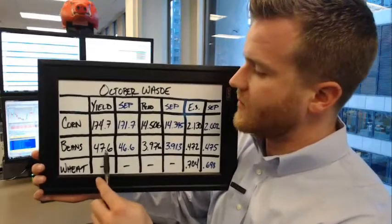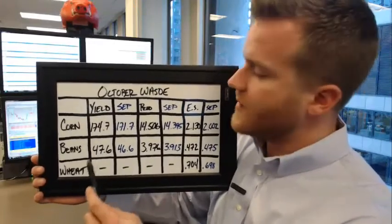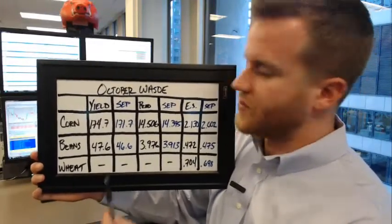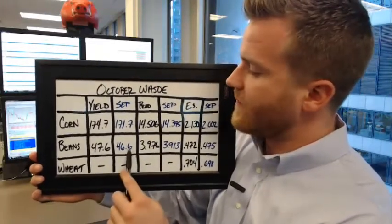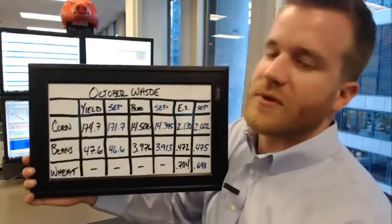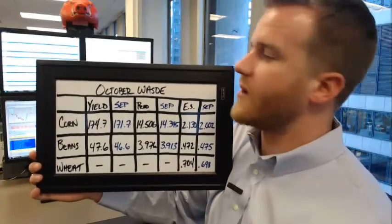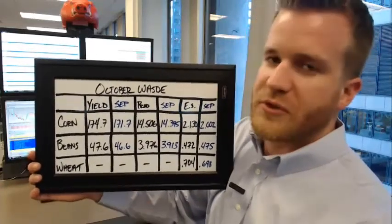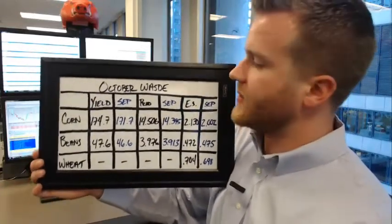Bean yields are also expected to increase, coming in at 47.6 bushels per acre versus 46.6 bushels per acre in the September report — so a one bushel per acre increase there.